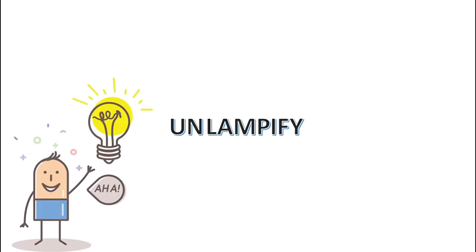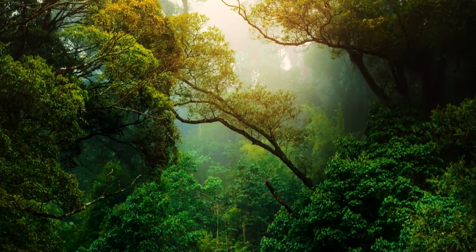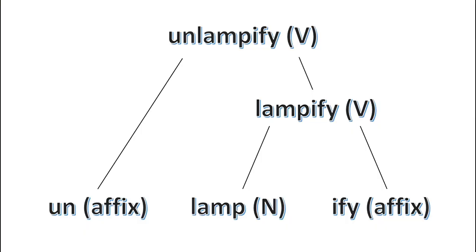Once you have this understanding of the word structure, it probably took you some additional conscious effort to construct a plausible semantic meaning of the word — but you got there in the end. We can represent this morphological structure in a tree format, which shows which parts attach to which. You can see that a hierarchical structure emerges, where -ify first attaches to lamp, and then un- attaches to lampify. Our minds are doing this kind of work behind the scenes every time we recognize a complex word.